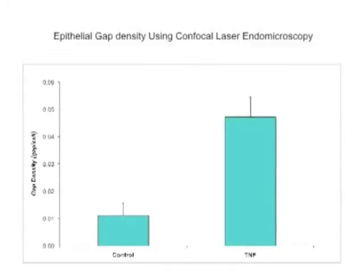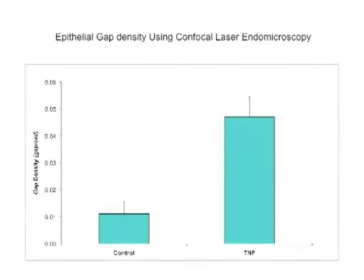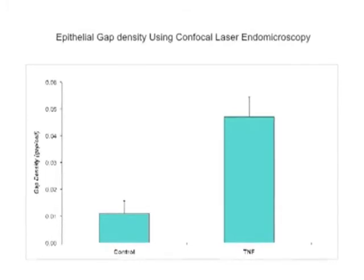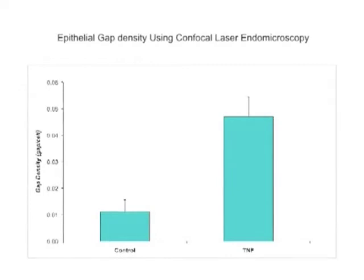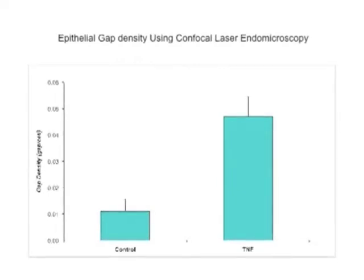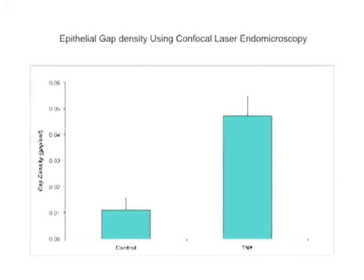Epithelial gap density as determined by confocal laser microscopy is plotted on the y-axis. Control is represented by a bar on the left-hand side while the TNF-alpha treated control group is represented by a bar on the right-hand side. Cell shedding is four-fold higher in the TNF-treated mice as compared to control.